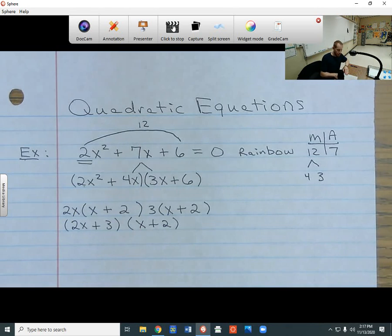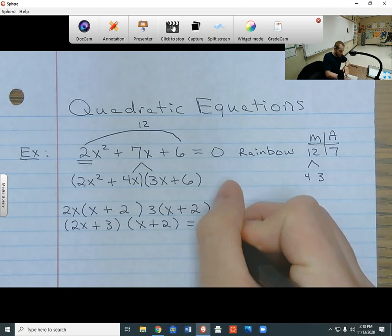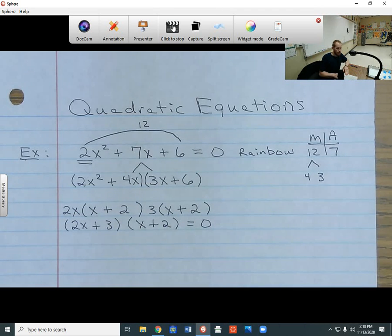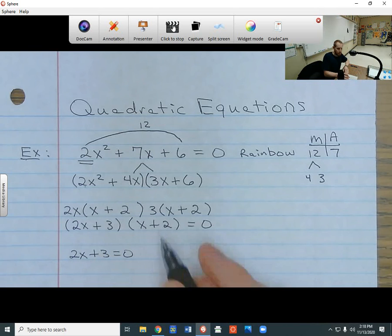I have everything still equal to 0, so I need to write equal to 0 over here. So now, I know what I need to set equal to 0. I'm going to have two different equations, like usual. So I'm going to have 2x plus 3 equals 0, and I'm going to have x plus 2 equals 0. And then I solve both for x.